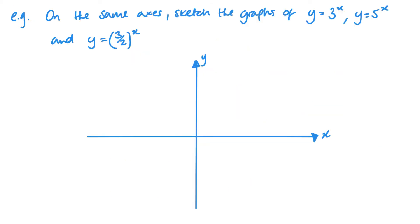Here we have three graphs: y equals 3^x, y equals 5^x, and y equals 3/2 raised to the power x. Now, I can say straight away, for all three graphs, when x is 0, then all of them will be y equals 1.